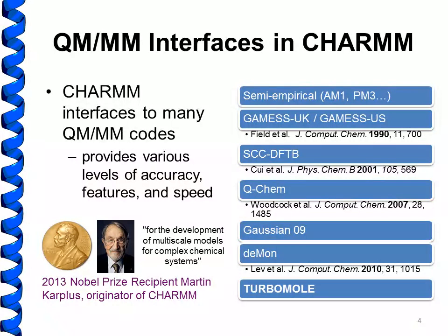The justification for adding yet another QM/MM interface to CHARM is the same reason why we have all these different QM/MM codes to begin with. Each of these codes has a particular set of features and advantages that provide different functionality, and by interfacing them to molecular mechanical codes, that makes these available for QM/MM simulations. Adding CHARM Turbomole allows us to access what's uniquely advantageous to Turbomole within CHARM.